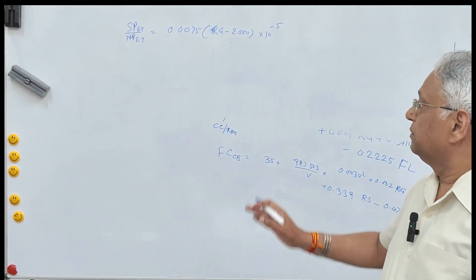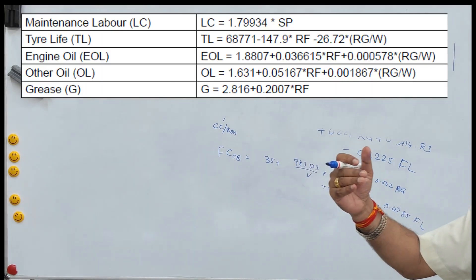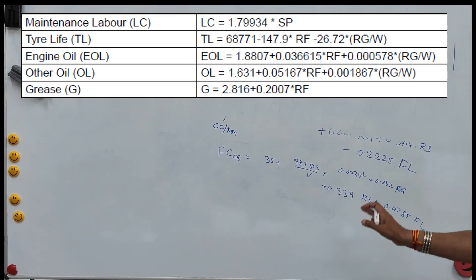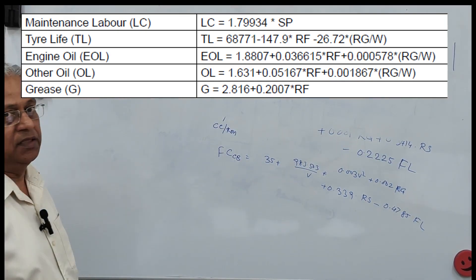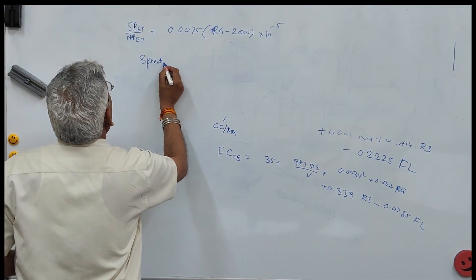Similarly, you can see in this table the cost of labor, tire life, engine oil, and other parameters. These equations require speed to be estimated, and speed depends upon the number of lanes on the road.